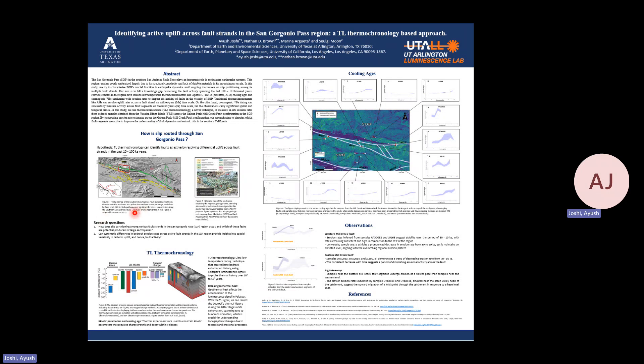The first figure in my poster is a hill shade map of the Southern San Andreas fault zone, and it shows all the major faults in Southern California. It also shows the Northern and Southern stress pathways that are marked in green and yellow respectively. These pathways are vital for understanding how slip is transmitted along the multi-stranded San Andreas fault, and our study area is highlighted here in a red box.